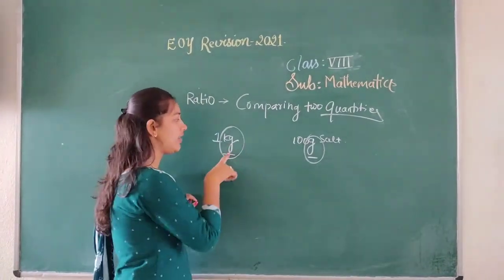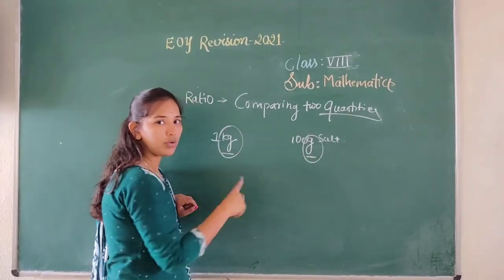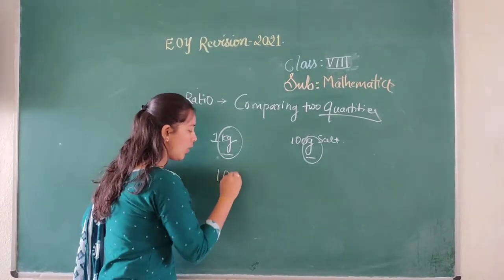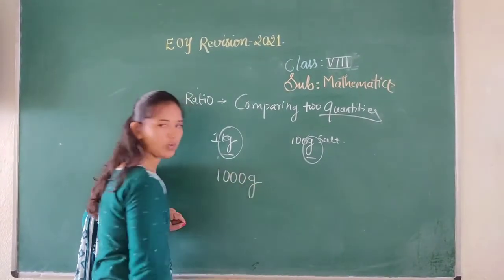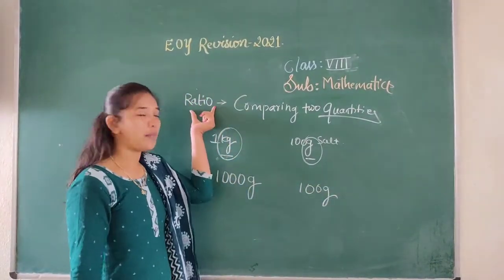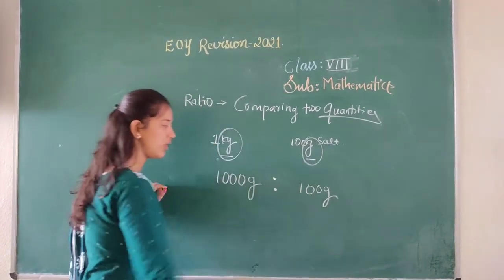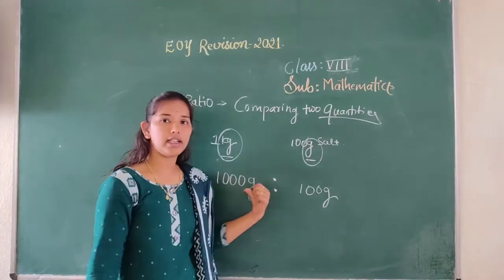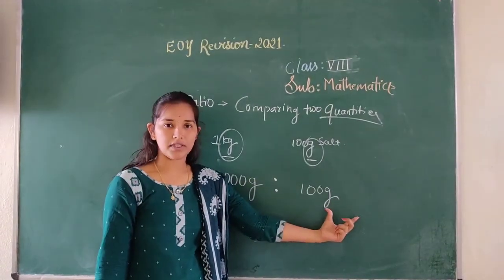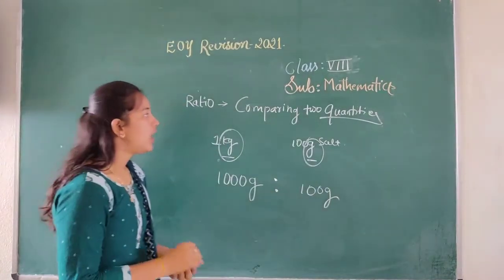We are going to make it same, means either we have to convert 1 kg into grams or grams into kg. We are converting 1 kg into grams. For 1 kg how many grams? 1000 grams. And here, 100 grams. Using to represent the ratio, the symbol is 2 dots. 1000 grams is to 100 grams. We are calling this symbol as 'is to'.